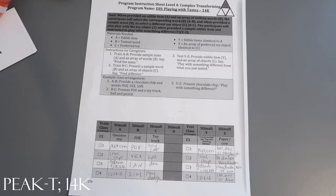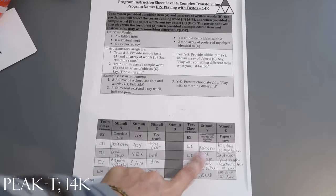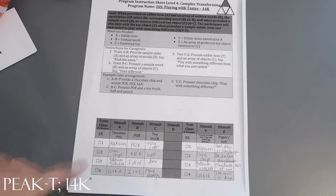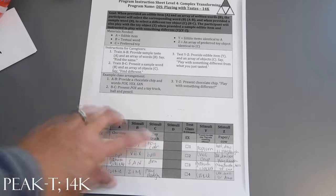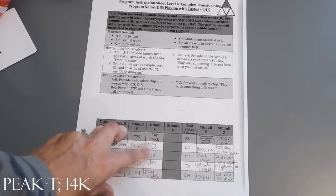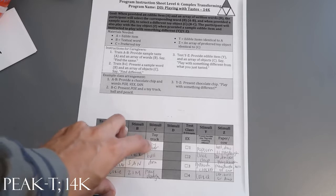For Y, edible items that are identical to A - so again we have popcorn, chocolate chip, graham cracker, and cookie, same as stimuli A. For Z, you're going to use the array of preferred toy objects that are identical to C. You're basically targeting asking them to play with something different from what they tasted.